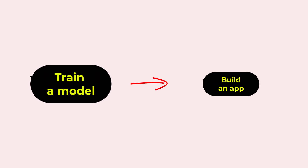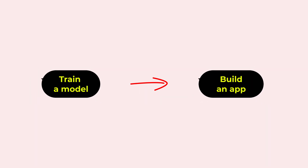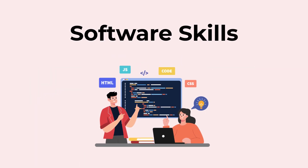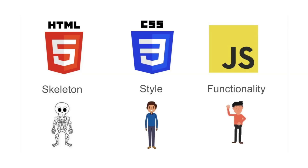You trained your model and built an AI app — the next step is to integrate it into a web app. You need software skills. To create the front-end of the web app, you need to know HTML, CSS, and JavaScript.